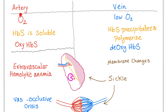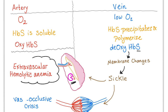In the artery, there is oxygen, so hemoglobin S is soluble — it is in oxyhemoglobin S form. In the vein, there is low oxygen, so hemoglobin S will precipitate and polymerize as deoxyhemoglobin S. This deoxyhemoglobin S polymerizes, leading to membrane changes: calcium influx, potassium efflux, water exits the cell, the cell dehydrates and sickles. It then has two destinations: either to the spleen to be destroyed by splenic macrophages — extravascular hemolytic anemia — or to get stuck in the capillaries, especially on the venous side, leading to vaso-occlusive crises, which are painful.